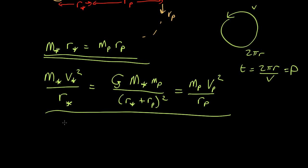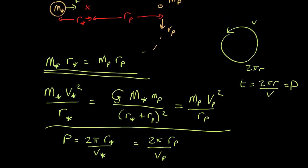So we have that the period is equal to 2 pi r of the star over the velocity of the star, or equivalently 2 pi radius of the planet over the velocity of the planet. OK, so those are our three equations. Now let's use them to derive something in a system like this.